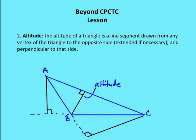Next, altitudes. An altitude of a triangle is a line segment drawn from any vertex to the opposite side. In obtuse triangles, you may need to draw the altitude outside the triangle itself. In triangle ABC, which is obtuse, to extend a line from vertex A perpendicular to BC, you extend BC outward. Similarly, to draw an altitude from C to AB, you extend AB outward.